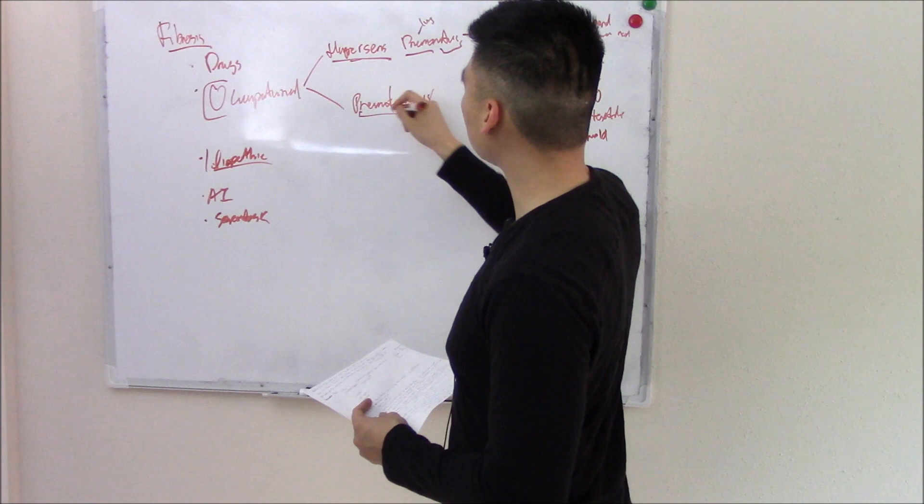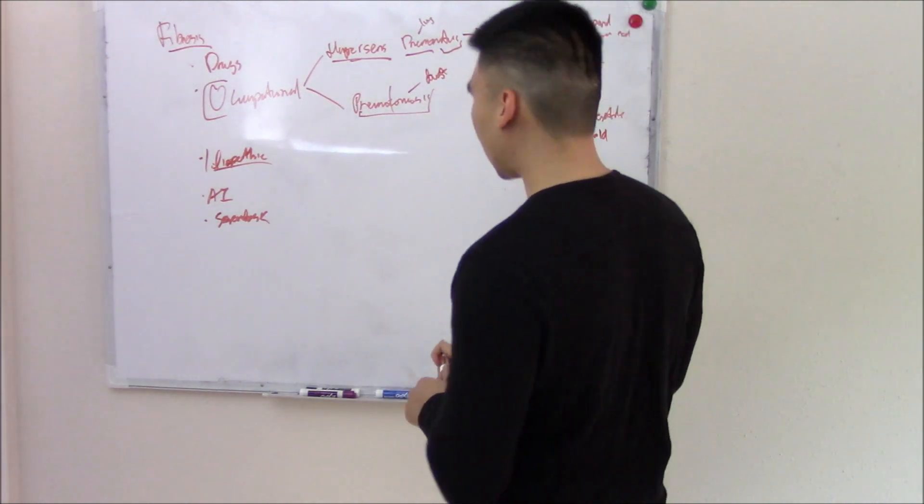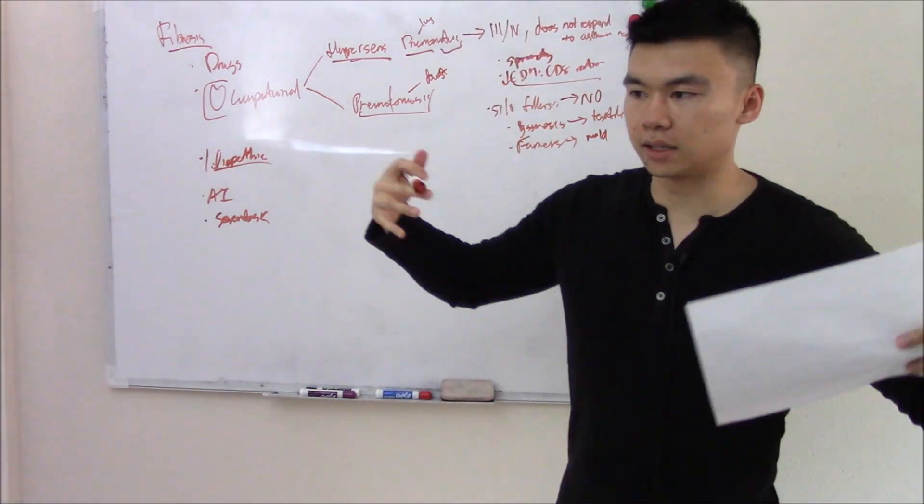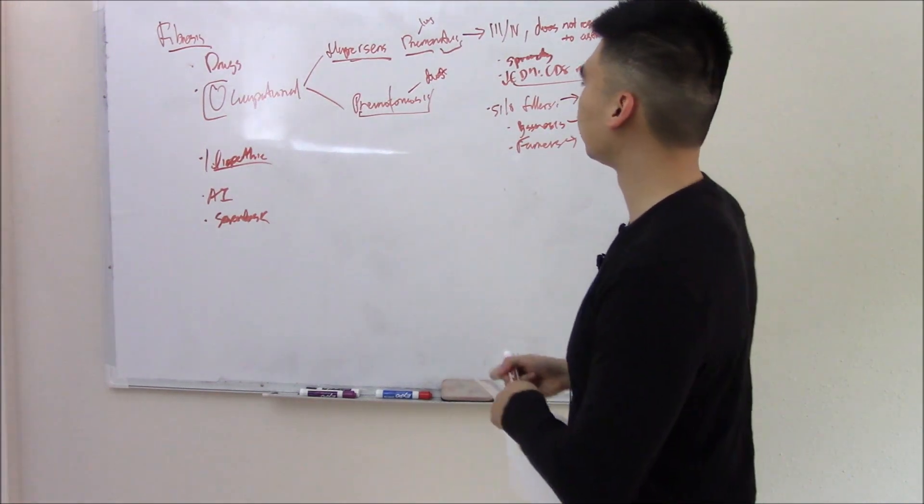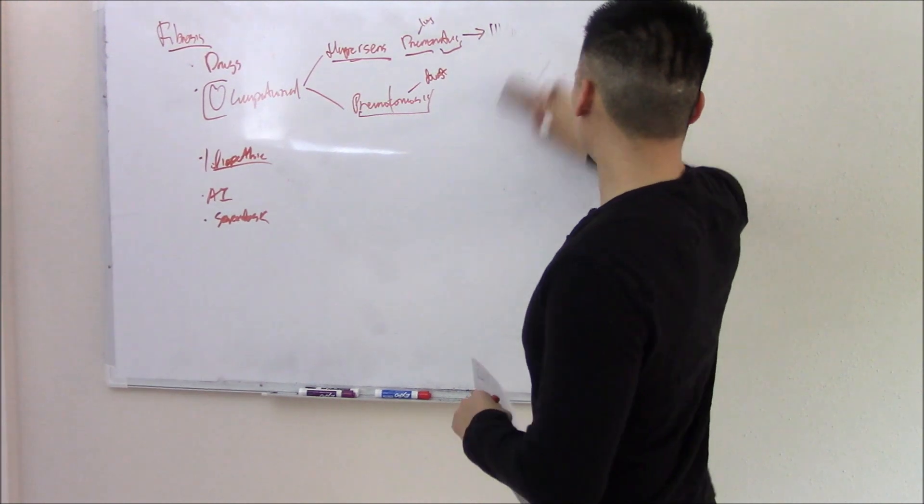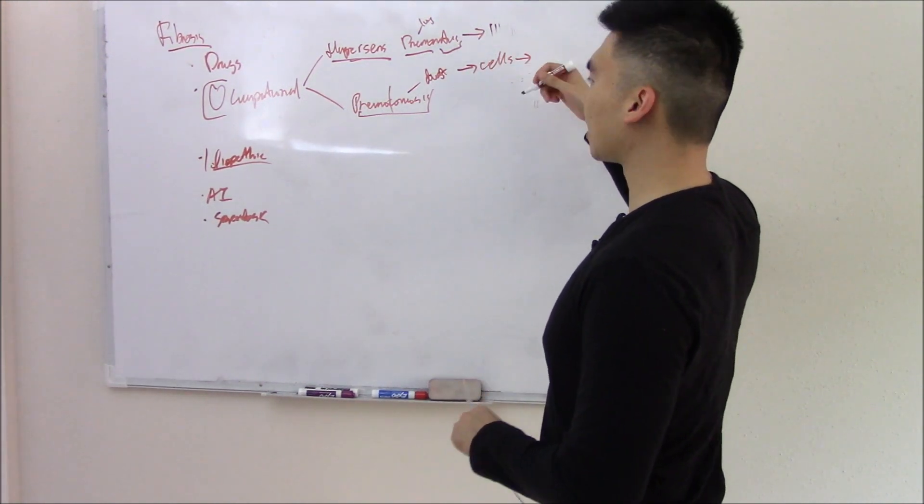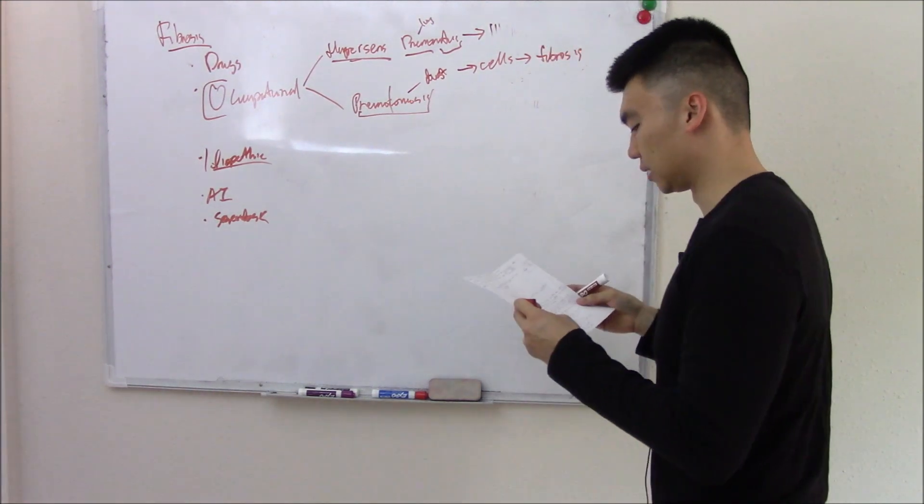What's pneumoconiosis? Pneumo means pertaining to the lungs. Coniosis means dust. This is not a hypersensitive reaction. This is just dust getting into your lungs. And when dust gets into your lungs, it attracts cells, attracts them to create fibrosis. So dust attracts cells, which release cytokines, cause inflammation, cause fibrosis, cause that restrictive lung disease.